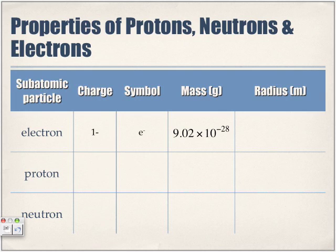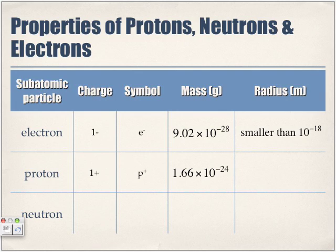The radius of the electron is smaller than 10⁻¹⁸ meters — incredibly small. The proton has a positive charge, represented by the symbol p⁺. Its mass is significantly greater than that of the electron, with fewer zeros after the decimal, and its radius is 10⁻¹⁵ meters.